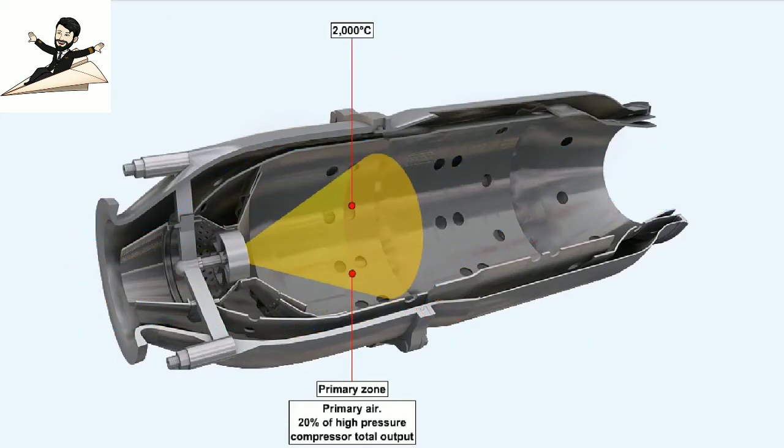The temperature of the gases at the center of the primary zone reaches about 2000 degrees Celsius. This is far too hot for the materials of the nozzle guide vanes and turbine blades, so a further drop in temperature is required before the gases can be allowed to exit the combustion chamber.